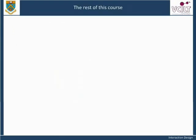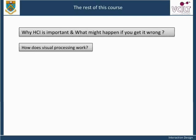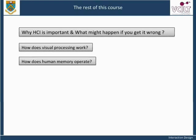This unit has been an introduction to the course. In the next unit, you will learn about more motivations for studying HCI, including why HCI is important and what might happen if you get it wrong. You will also explore the capabilities and limitations of human information processing — how humans process information from their senses, how visual processing works, what other senses are used, and how human memory operates — and how this knowledge can be used to build better interfaces.